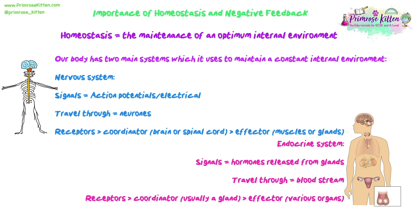The other system the body uses to maintain homeostasis is the endocrine system — all of the glands in your body. Glands are specialised organs or tissues that secrete hormones. The signals they're sending are not electrical signals; they're chemical signals, which is what a hormone is, being released from the glands and travelling through the bloodstream. There are receptors, then a coordinator which is usually a gland, and then an effector such as other glands or organs like the liver.